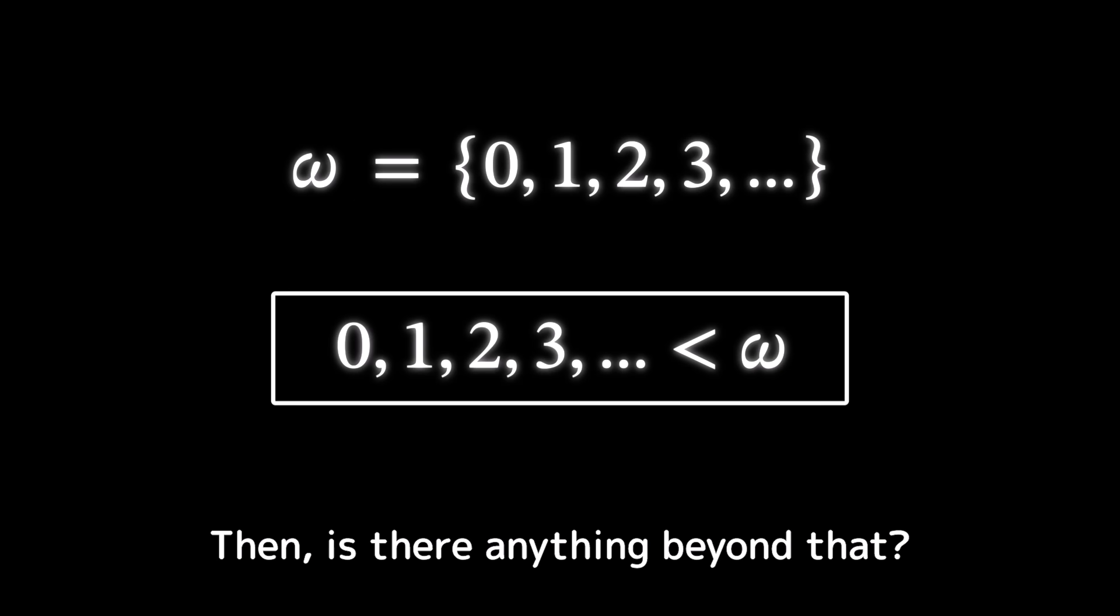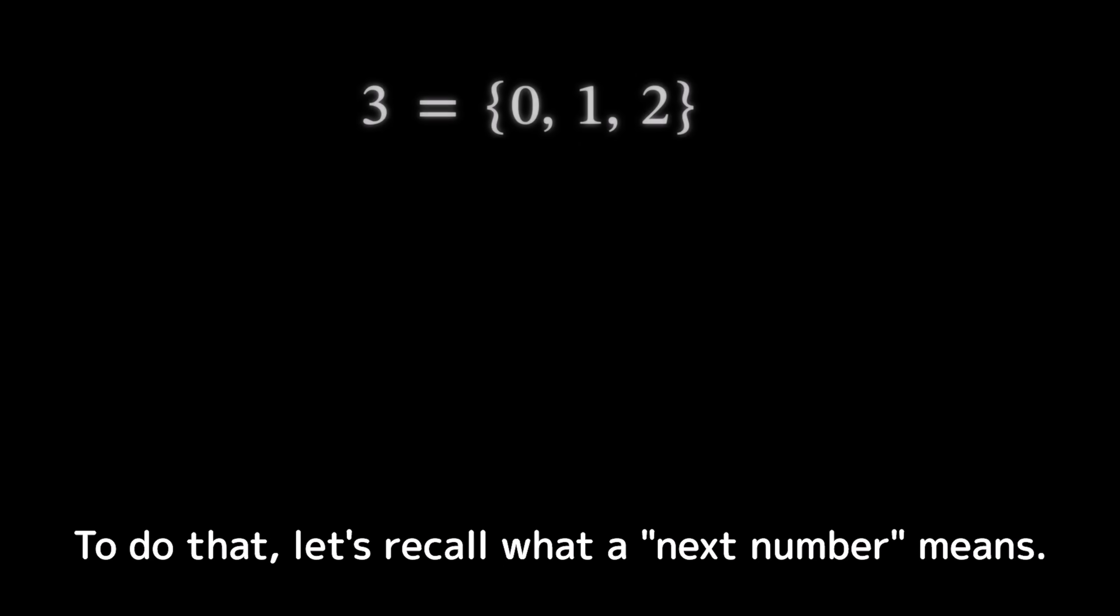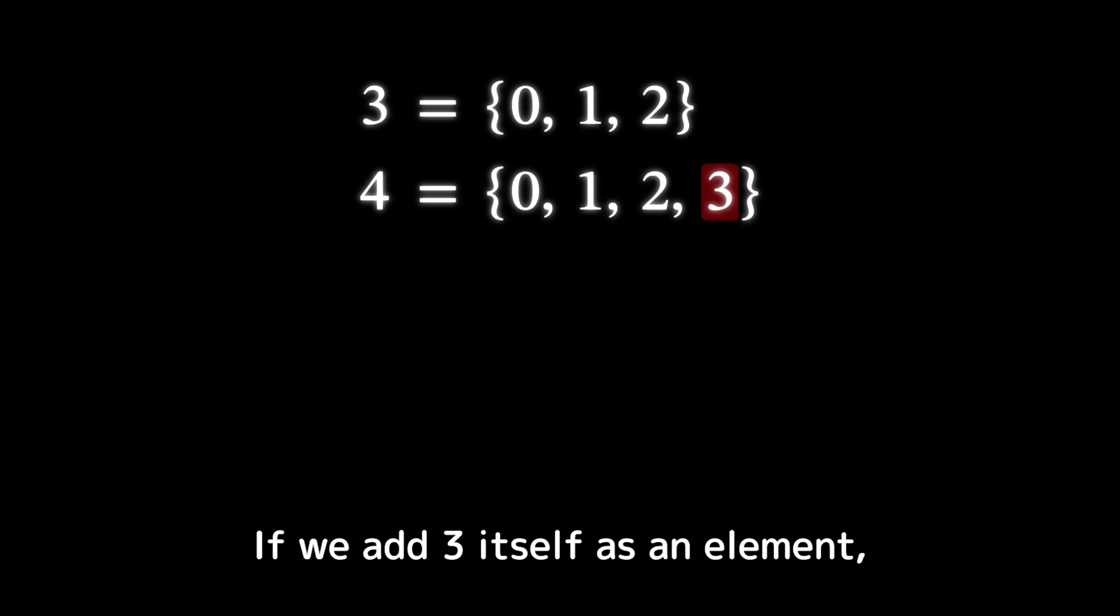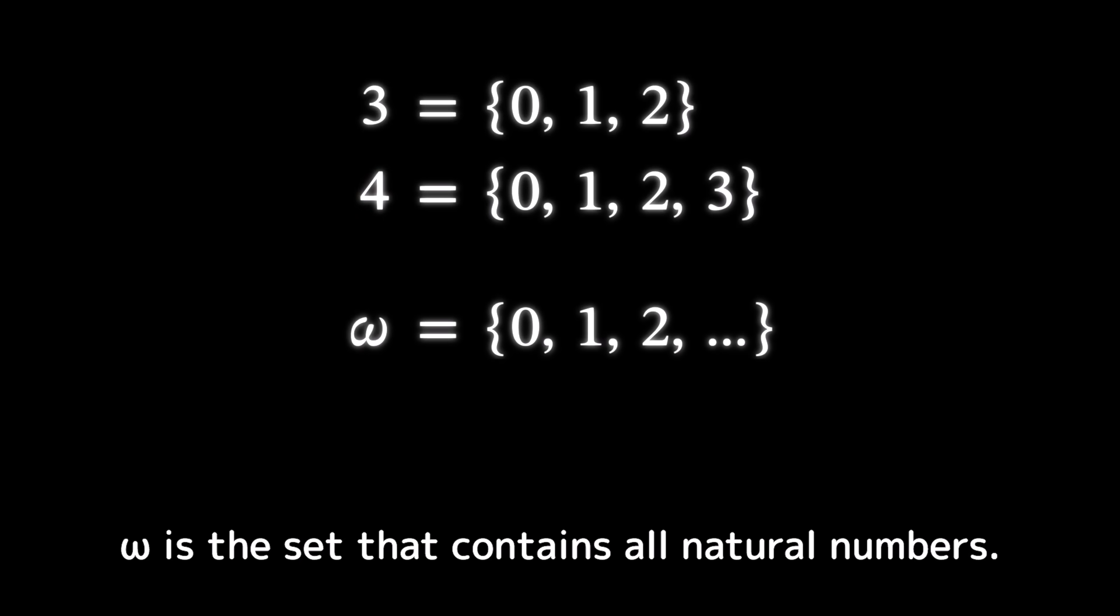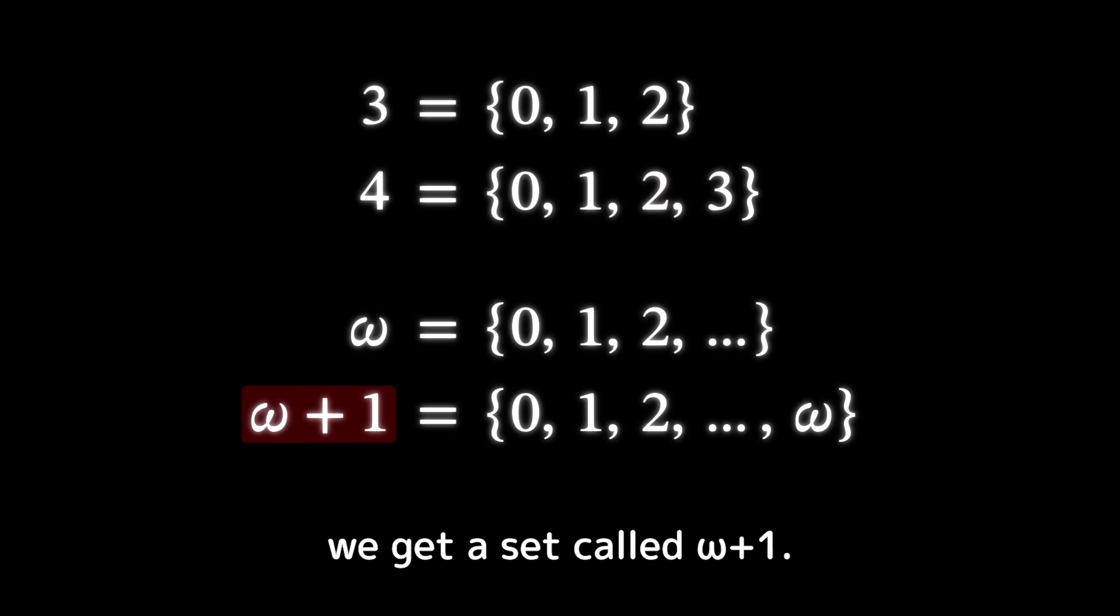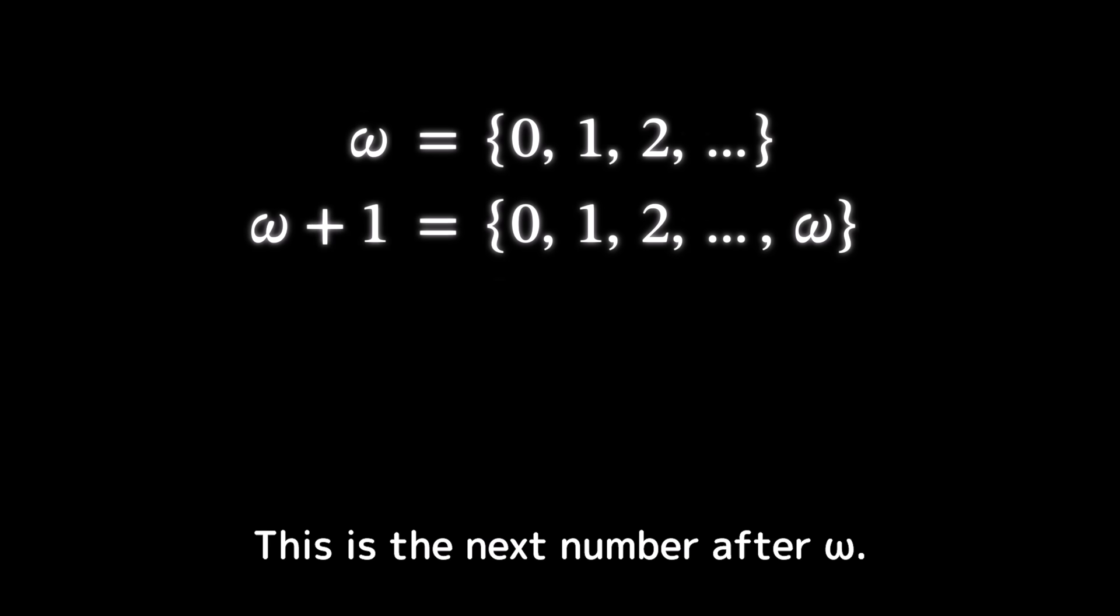Then, is there anything beyond that? Can we imagine a next number after omega? To do that, let's recall what a next number means. For example, three is a set that contains zero, one, and two. If we add three itself as an element, we get to number four. Let's apply the same idea here. Omega is the set that contains all natural numbers. Now, if we add omega itself as an element, we get a set called omega plus one. This is the next number after omega.